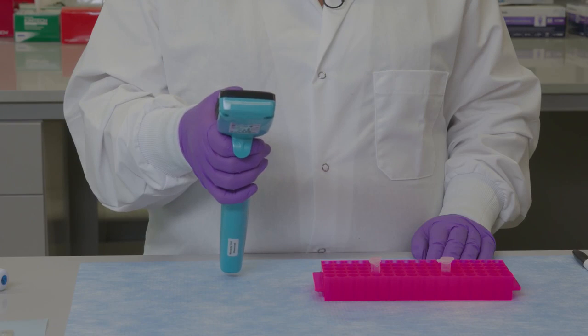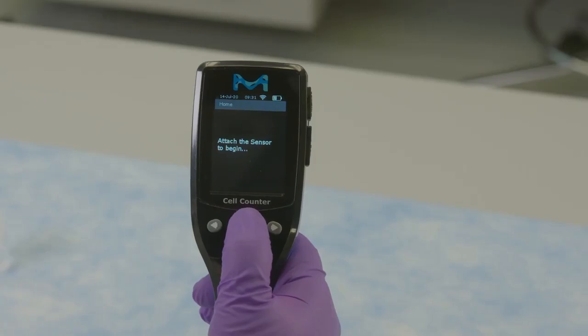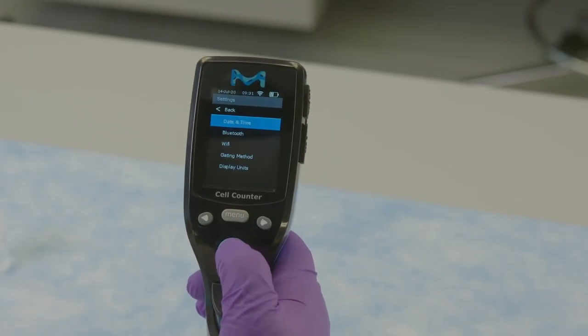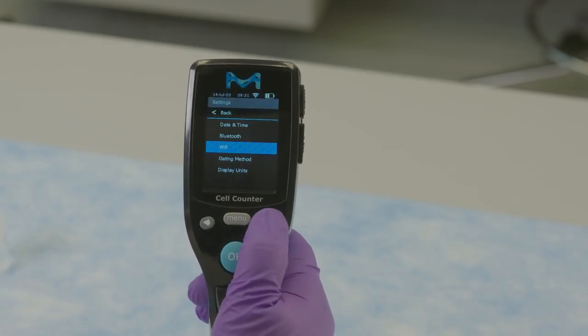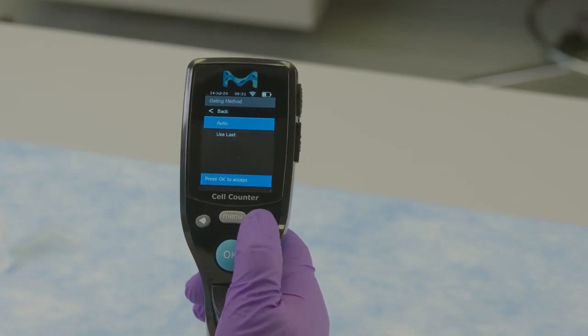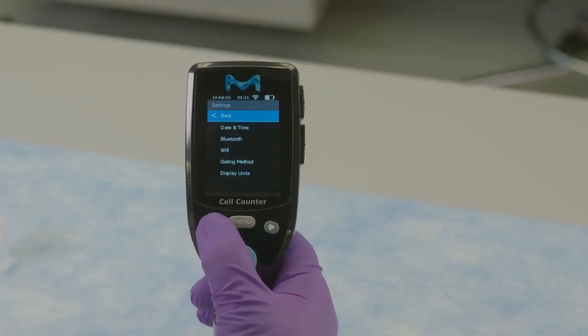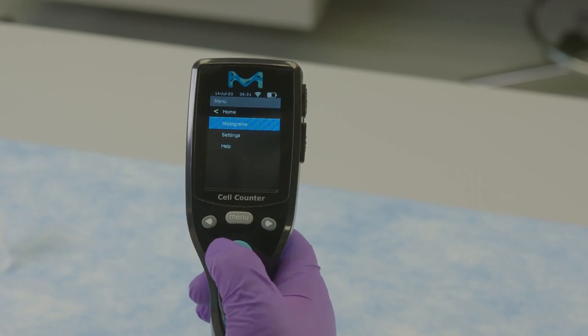For first usage, set to auto gating. The user can decide whether to continue using auto gating or change to use last for similar sample runs. Select menu, gating and scroll to auto gating. Hit OK and return to main menu.